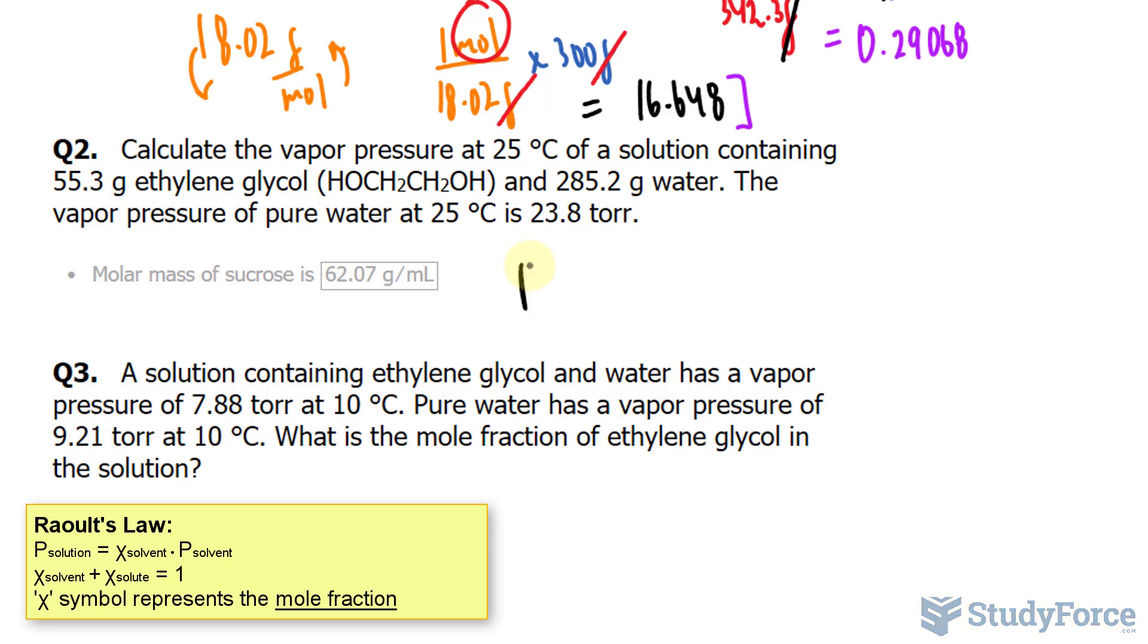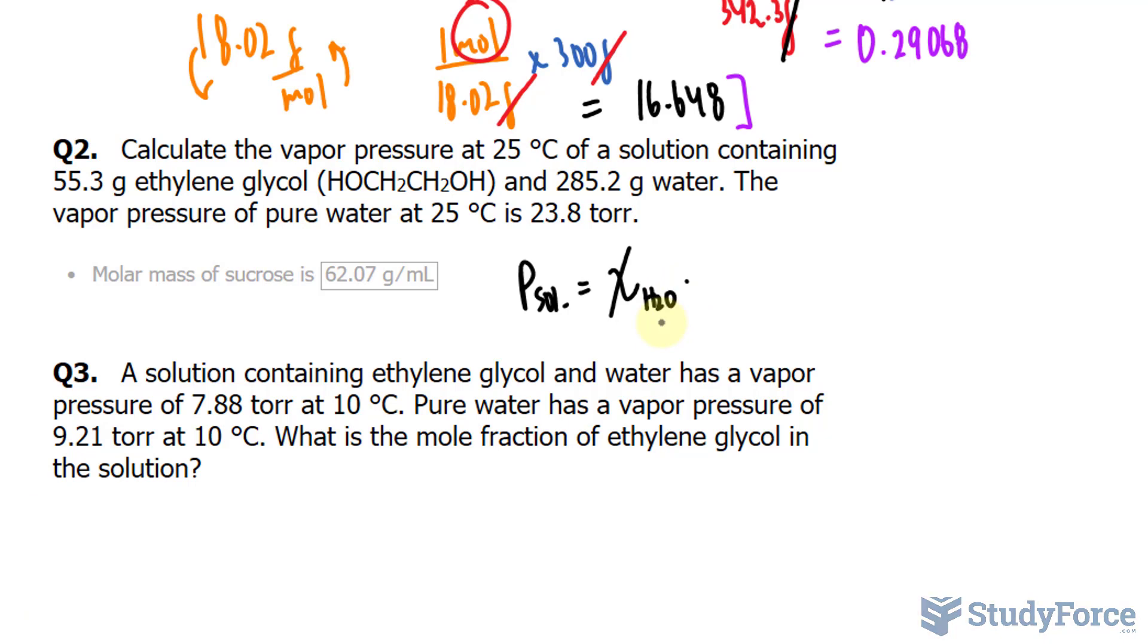So the pressure of the solution is equal to the mole fraction of the solvent, which in our case is H2O, times the vapor pressure of pure solvent, which is 23.8. What we have to do is find out the mole fraction of H2O.